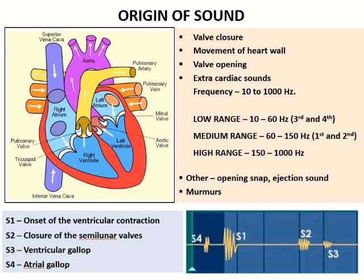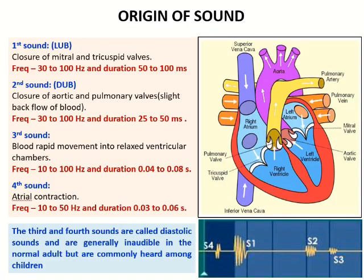In most cases you can hear the sounds of S1 and S2 because their frequency is in the order of 60 to 150 Hz, whereas the third and fourth sounds have low frequency ranges and cannot be heard in a normal adult. Murmurs, named as noise, are produced in the range up to 1000 Hz due to abnormal action of the heart. The third and fourth sounds are called diastolic sounds, which are generally inaudible in normal adults but are commonly heard among children.